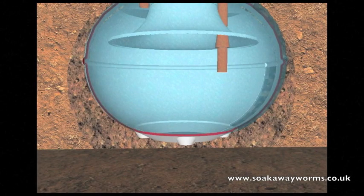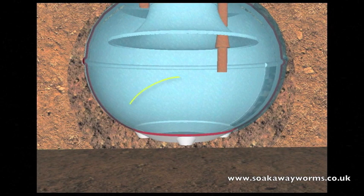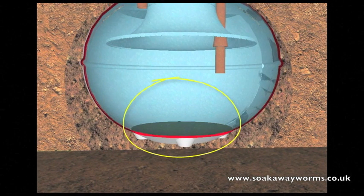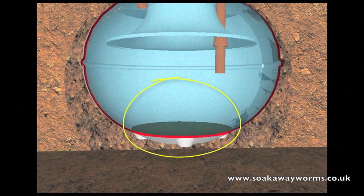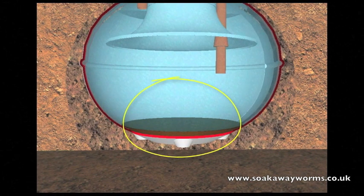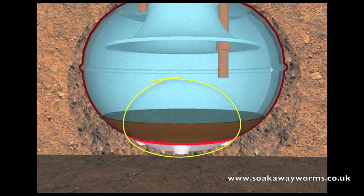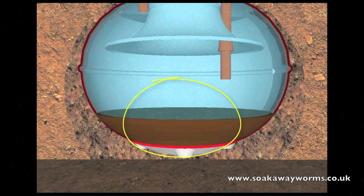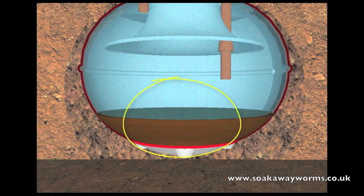All the heavy particles such as the fat and the solids drop to the bottom of the tank. Over time, the more fat, grease and solids that fall to the bottom cause a buildup. This is why every year people get their septic tanks emptied or desludged.